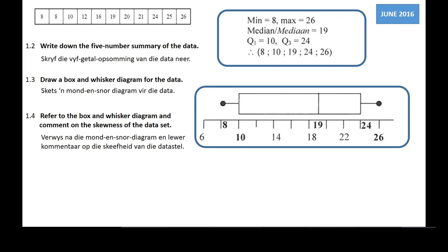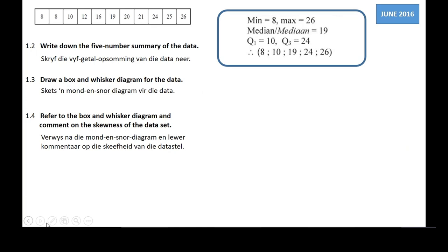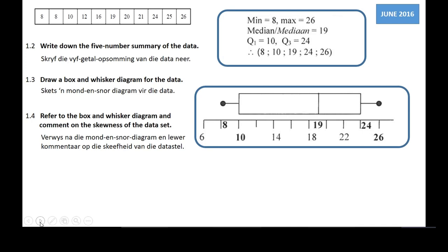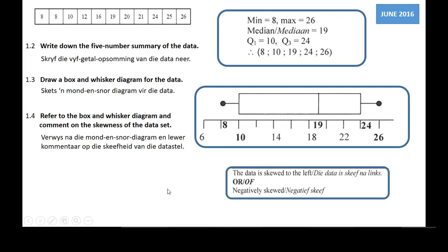For question 1.4, referring to the box-and-whisker diagram, we comment on the skewness of the data. Our Q2 (median) is at 19, and we have already calculated the mean as 17.19. The mean is less than the median, so the numbers on the left-hand side are bigger than the numbers on the right-hand side. Therefore we say the data is skewed to the left or negatively skewed.